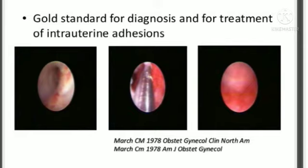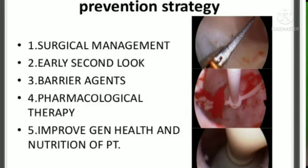Asherman syndrome is underdiagnosed. Causes include miscarriage, postpartum complications, caesarean section, trophoblastic diseases, Mullerian malformation, infection, abdominal myomectomy, and uterine embolization.